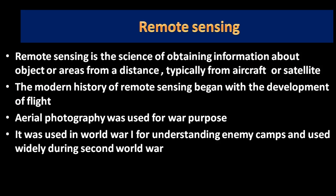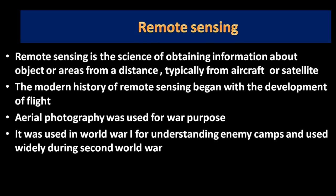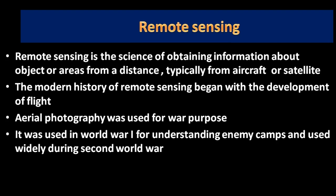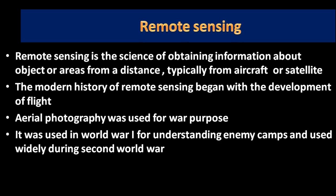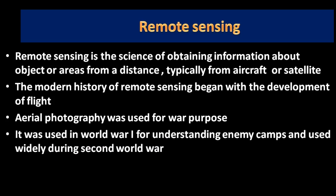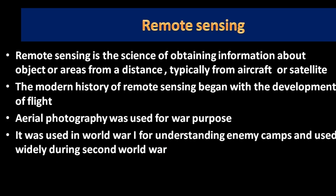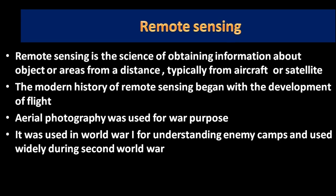The modern history of remote sensing began with the development of flight. Aerial photography is the taking of photographs of the ground from an elevated position, usually with cameras placed in aircraft, balloons, or helicopters. Aerial photography was used for war purposes — in World War 1 for understanding enemy camps and widely during World War 2. In the later half of the 20th century, another turning point was the development of artificial satellites.